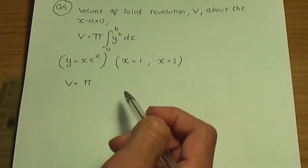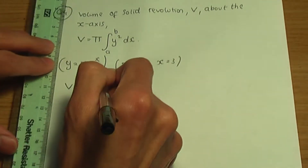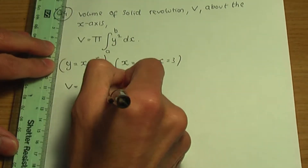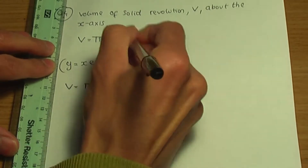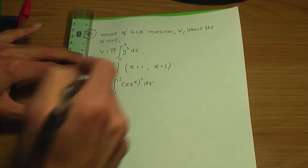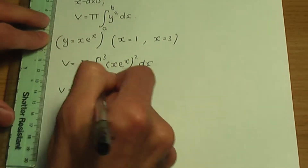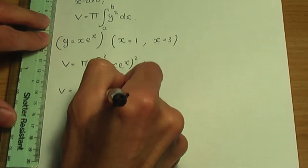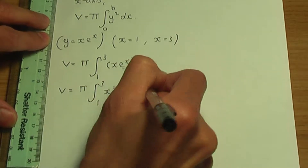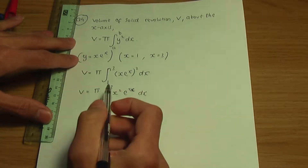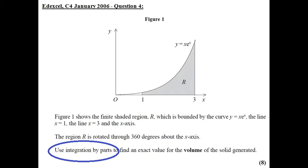Let's rewrite this with our data included. So v will be pi times the integral between limits 1 and 3 of y, which is xe to the x, squared with respect to x. When we square xe to the x, we get x squared e to the power 2x. So v equals pi times the integral from 1 to 3 of x squared e to the 2x with respect to x.